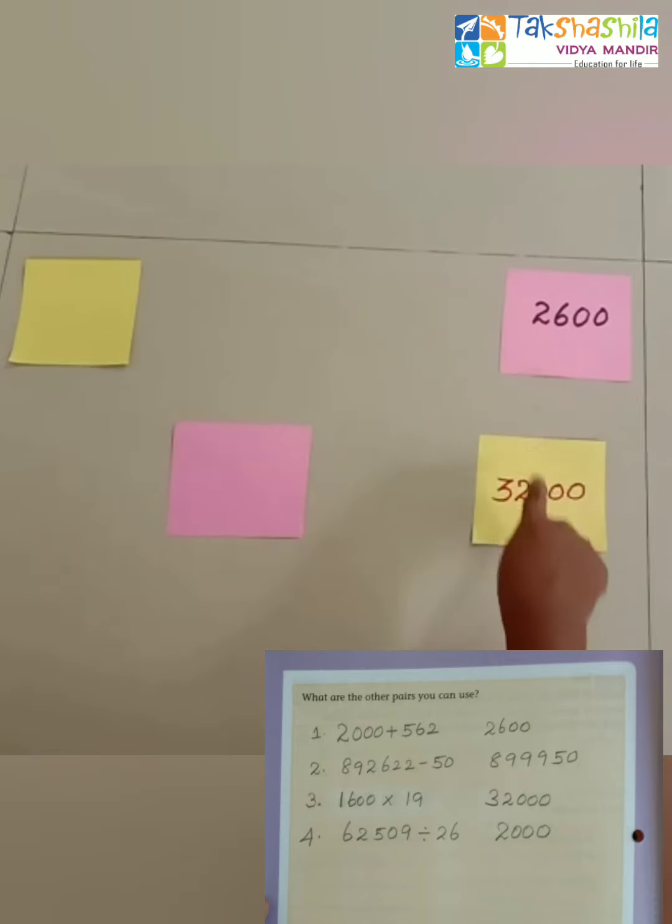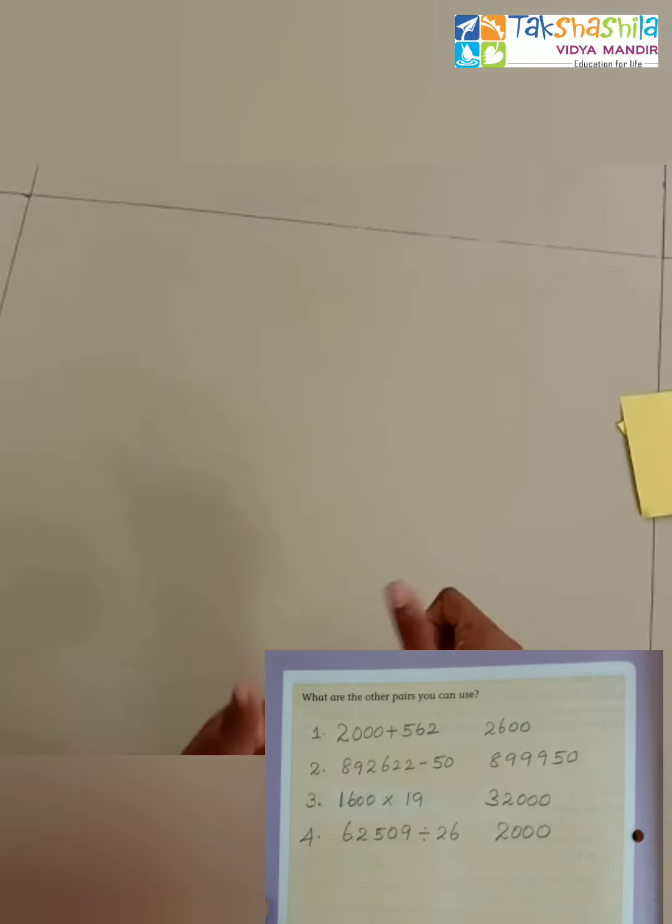Just see the next pair. It is 32,000 and 2600—it won't match, so I'm facing down the card back. Next card: it is 2000 plus 562, and it is 2600. It is matching! Yes, now we can keep the card aside. Next pair: it is 32,000 and 1600 into 19. Yes, it is matching. That's all, the game is over.